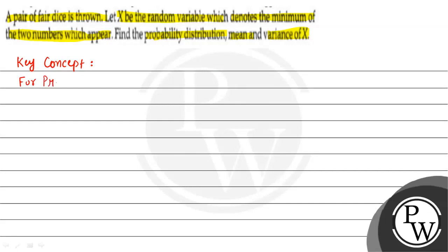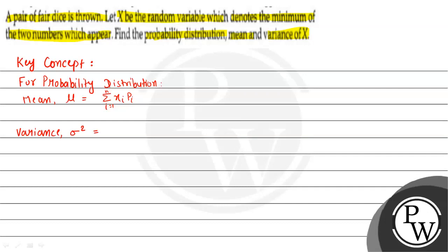The key concept to solve this question: for probability distribution, the mean is denoted by mu and this is given by summation of the product of Xi and Pi, where i is varying from 1 to n. Here Xi represents the event and Pi denotes the probability of that event occurring. Similarly, variance is denoted by sigma square and this is equal to summation of the product of Xi square into Pi, minus mu square.